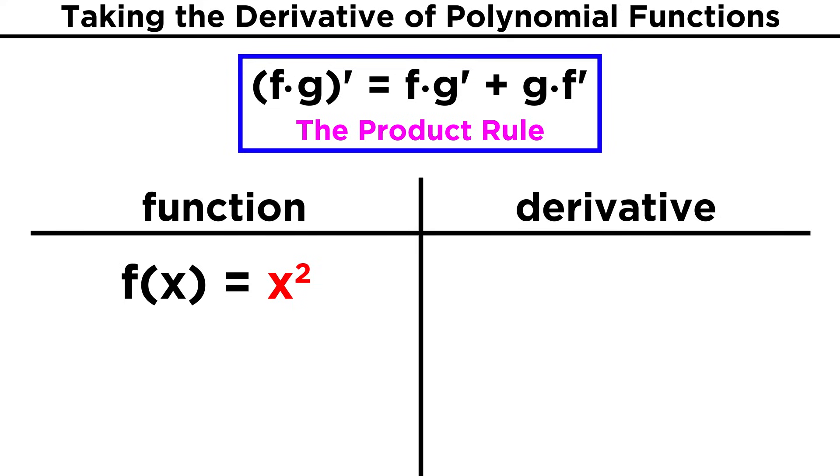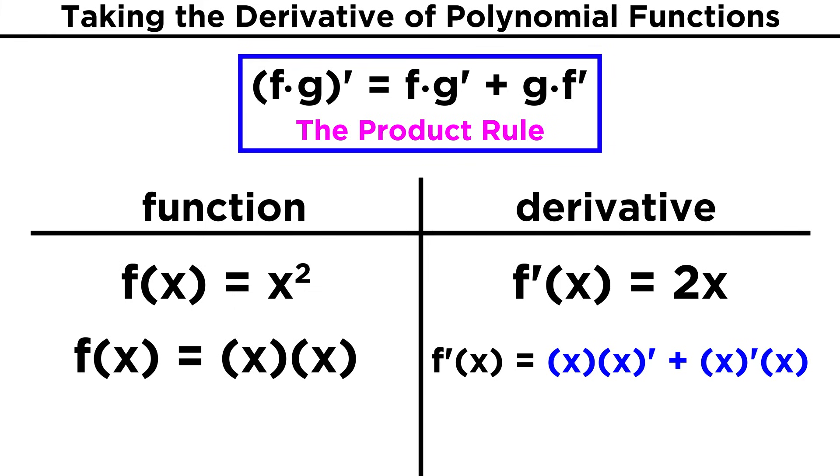We can even verify that this works by looking at x squared. We know the derivative is two x, but say we turn this into x times x and apply the product rule. x times the derivative of x is simply x, and the derivative of x times x is also x. So we add them together to get two x, and we can see that this works just as expected.